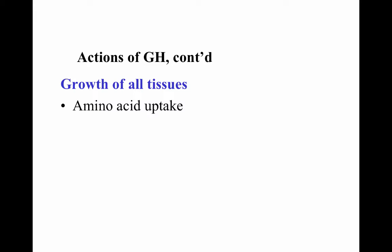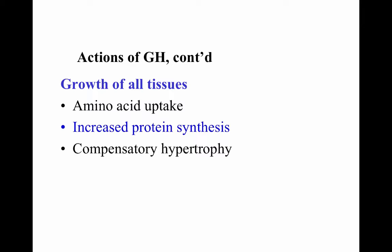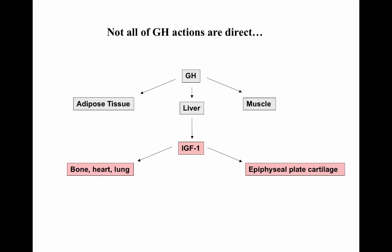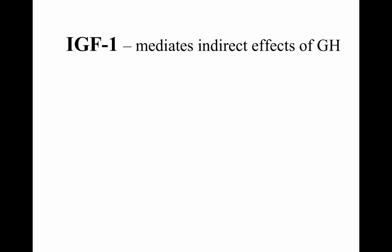Growth hormone is responsible for the growth of all tissues in the body through amino acid uptake, protein synthesis, and compensatory hypertrophy — increasing cell size but not cell quantity. Increased cell proliferation is called compensatory hyperplasia. Not all growth hormone actions are direct; when growth hormone enters the liver, it is converted to insulin-like growth factor (IGF-1) that affects bone, heart, and lung development as well as epiphyseal plate cartilage and long bone growth. IGF-1 is named because its molecular shape is similar to insulin.